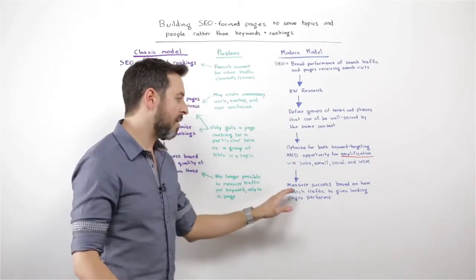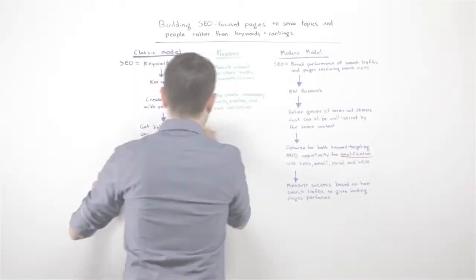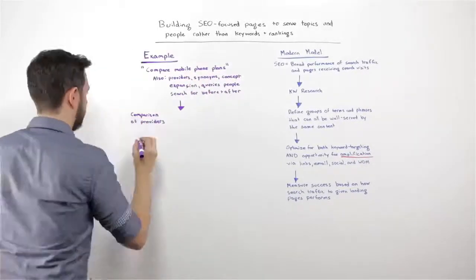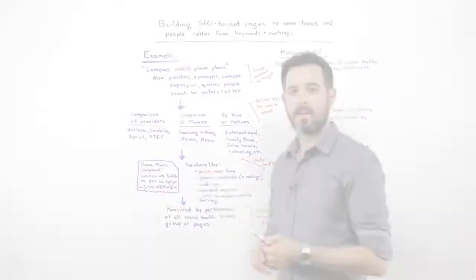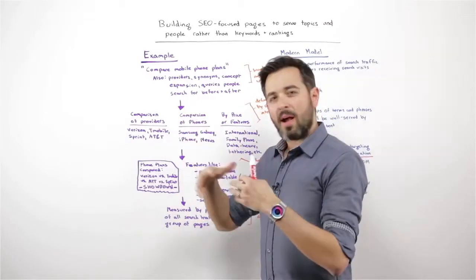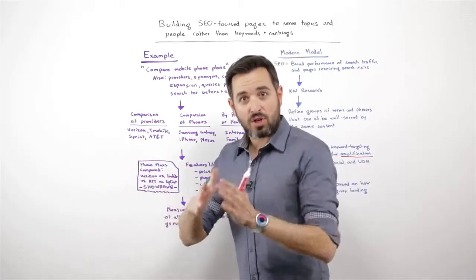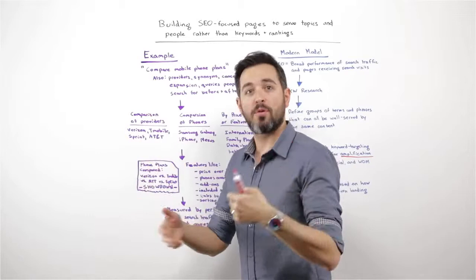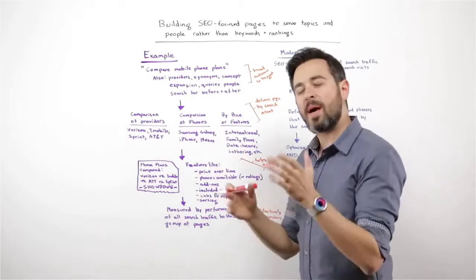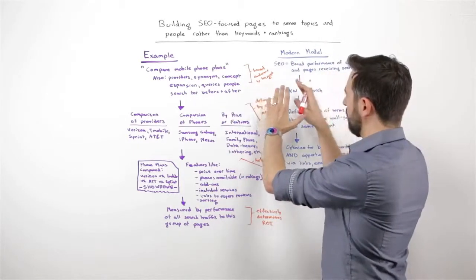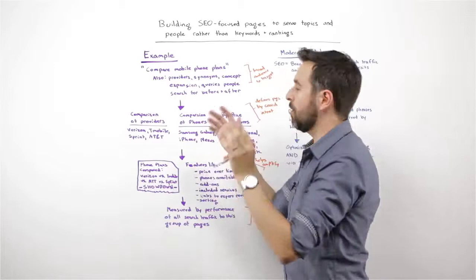And now I can measure success based on how the search traffic to given landing pages is performing. Let me show you an example of this. I'm focusing beyond bowling shoes — I'm going to go with comparing mobile phone plans. Let's say that you're putting together a site and you want to try and help consumers who are looking at different mobile phone plans figure out which one they should go with. So 'compare mobile phone plans' is where you're starting, and you're also thinking about how to expand beyond that to get broad performance and target everyone who's interested in this topic.